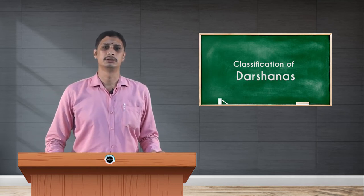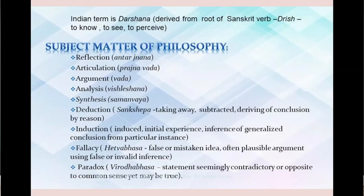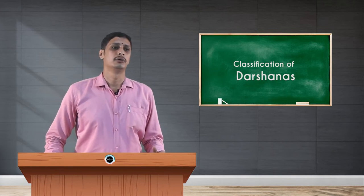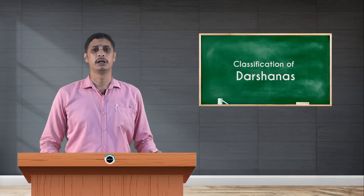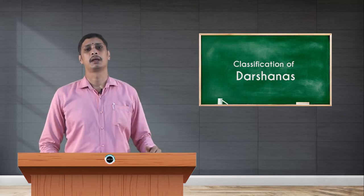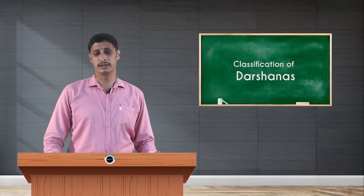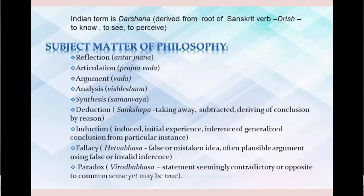In the Bhagavad Gita, there is a discussion between Lord Krishna and Arjuna. Arjuna puts different types of questions to negotiate with Lord Krishna. Then Lord Krishna says he is speaking like a Prajna Vadi — putting many articulations to avoid the war. So on the battlefield, Arjuna is engaging in Prajna Vada. The next subject matter of philosophy is argument.